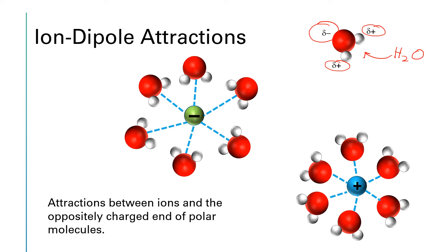And so the ion-dipole attractions are the blue dotted lines, which are indicating attraction between an ion, cation with its plus one charge or an anion with its negative one charge, and then the polar molecule water.